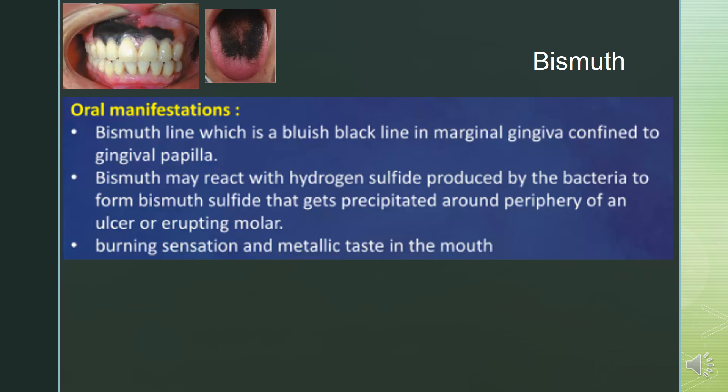Bismuth poisoning — oral manifestations include a bismuth line, which is a bluish-black line on the marginal gingiva confined to the gingival papilla. Bismuth may react with hydrogen sulfide produced by bacteria to form bismuth sulfide, which gets precipitated around the periphery of an ulcer or erupting molar.